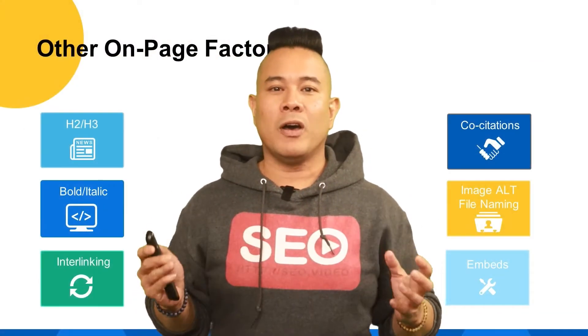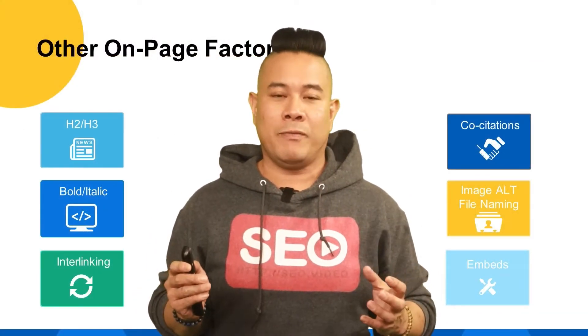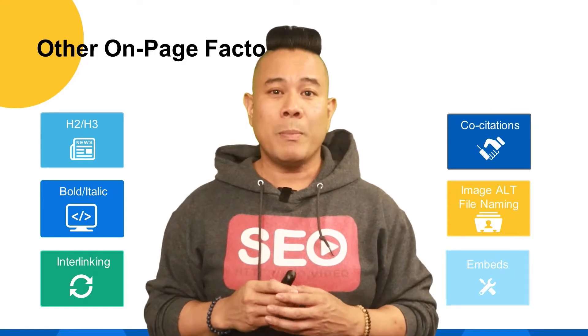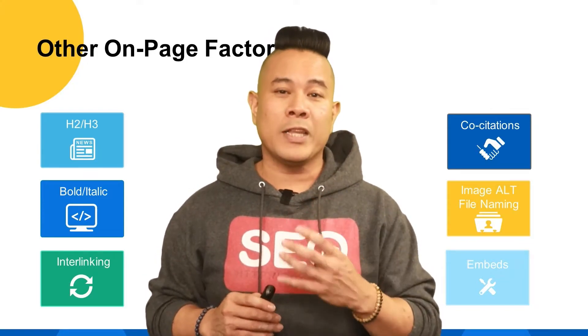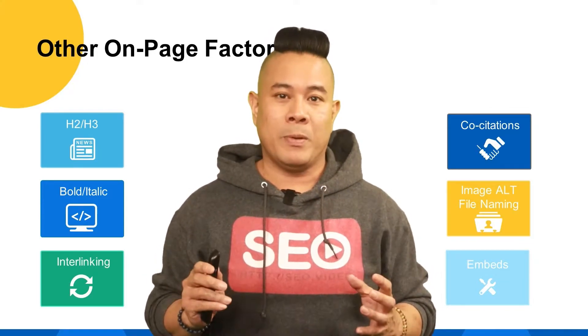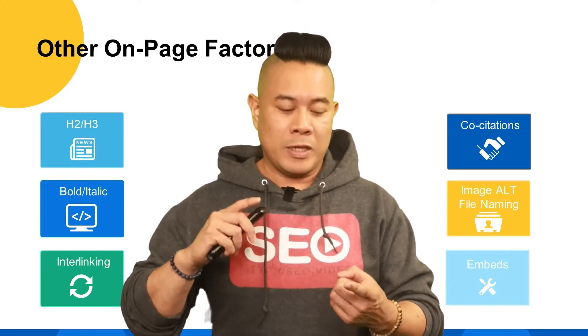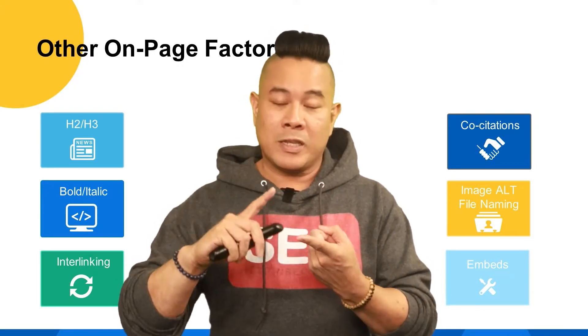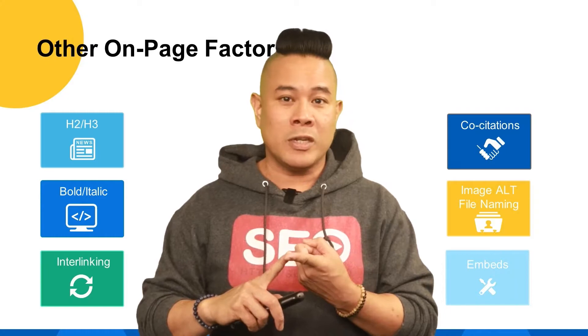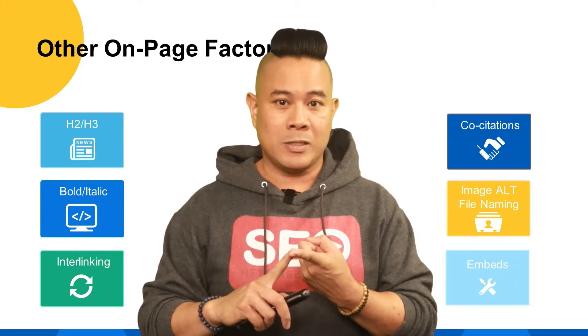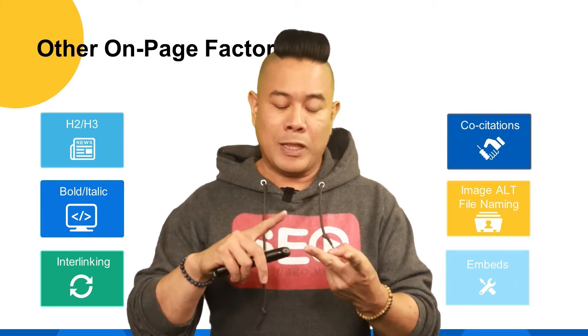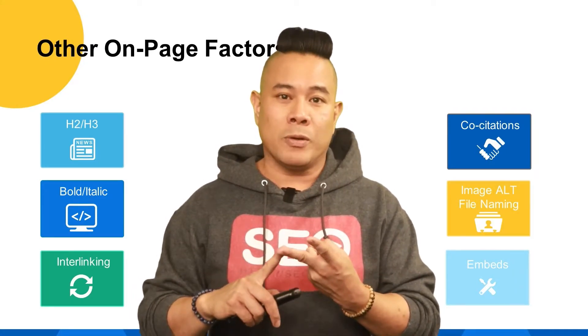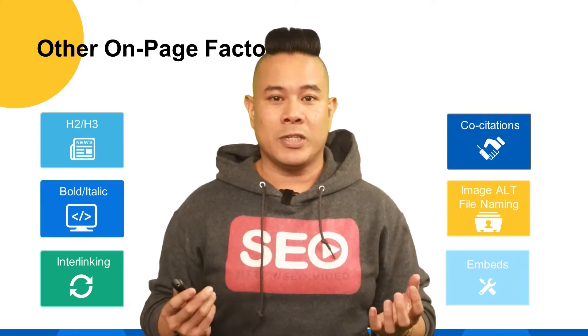There are plenty of other on-page ranking factors. Just remember those four and you'll be in good shape. Also think about the images you use and their alt text tags, and links you point out to, like co-citations.